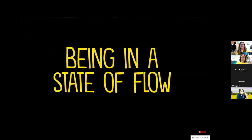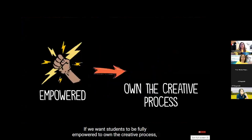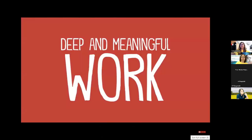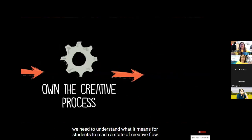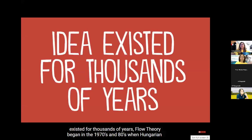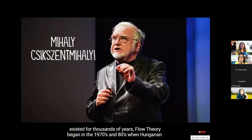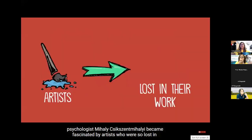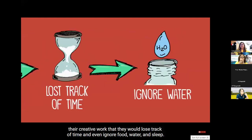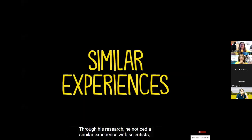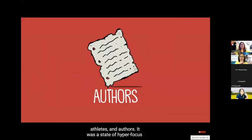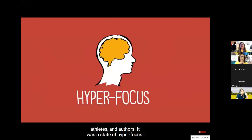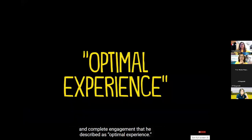[Video] You've probably experienced this when you were so engaged in a task that you lost track of time and place. There is a term for this — it's called being in a state of flow. If we want students to be fully empowered, to own the creative process, to engage in deep and meaningful work, we need to understand what it means for students to reach this state of flow. Although the idea of flow has existed for thousands of years, flow theory began in the 1970s and 80s when Hungarian psychologist Mihaly Csikszentmihalyi became fascinated by artists so lost in their creative work that they would lose track of time and even ignore food, water, and sleep. He described it as 'optimal experience.'